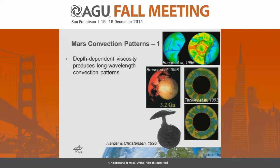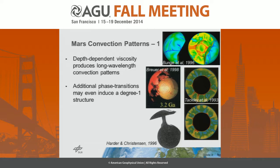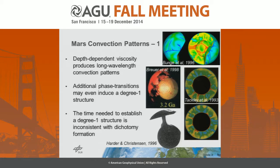Starting with strong depth-dependent viscosity, this has been argued to produce long-wavelength convection patterns, and even including phase transitions we can trigger a degree-one structure. A series of papers have looked at this, but the problem is that the time needed for this degree-one structure to establish is too long — it is inconsistent with the dichotomy formation.